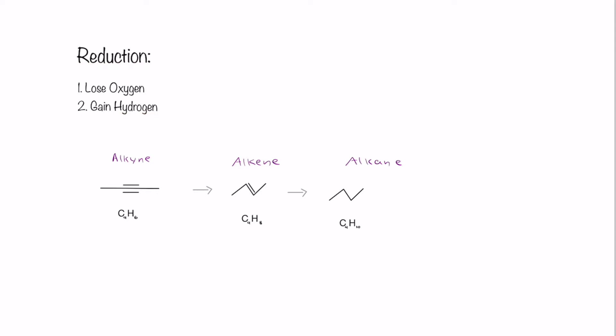Another way of thinking about it is reducing the amount of bonds. So we are reducing from a triple bond to a double bond, and from a double bond to a single bond. Now let's talk about some of the reagents that we can use to perform these reactions.